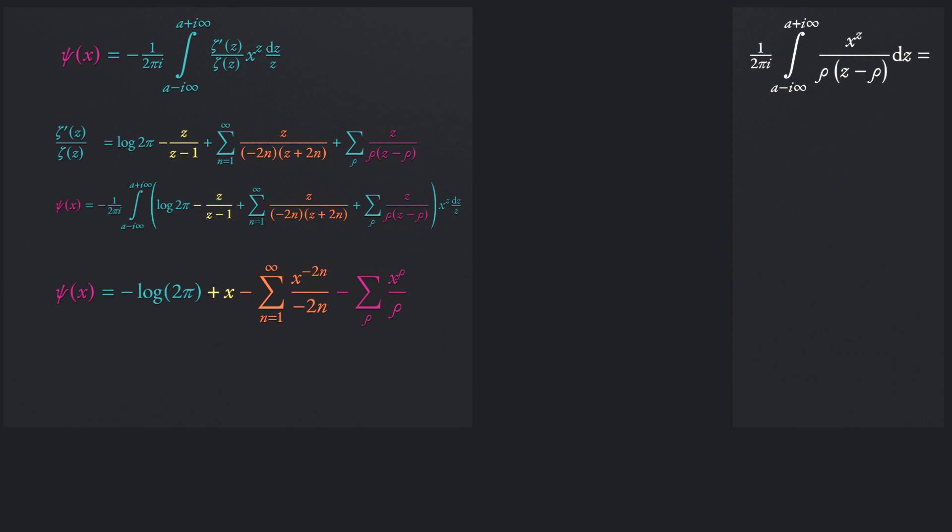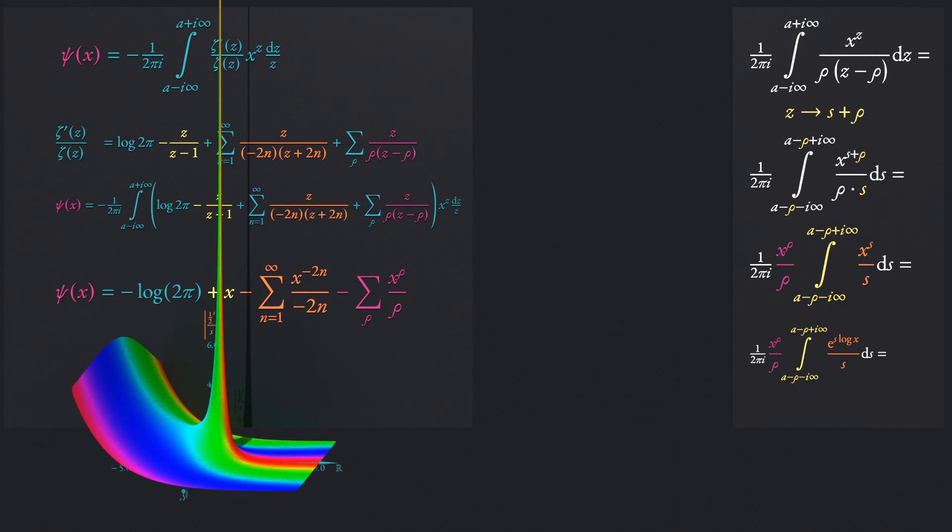A few steps of this contour integration are outlined for the contribution of one non-trivial zero. In the first step, the variable of integration is shifted by the position of the zero. This allows to take the power of x to ρ out of the integral. In the term inside, the integral now has a simple pole at the origin. The path of integration is parallel to the imaginary axis. The parameter a is arbitrary but larger than one. Therefore, even after the subtraction of ρ, the path still runs to the right of the pole. The power x to the s is re-expressed as an exponential.